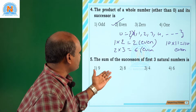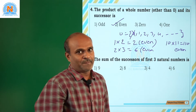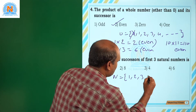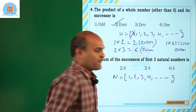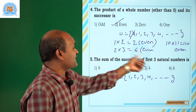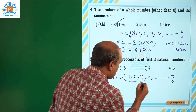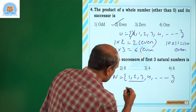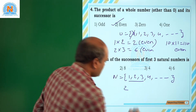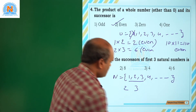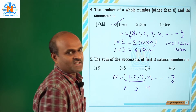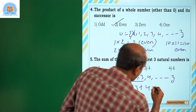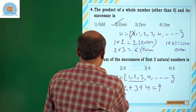Coming to the next one: the sum of the successors of the first 3 natural numbers. Natural numbers are 1, 2, 3, 4 and so on. First 3 natural numbers are 1, 2, 3. Successor of 1 is 2, successor of 2 is 3, and successor of 3 is 4. He is asking the sum of these 3 numbers: 2 plus 3 plus 4 equals 9. So the correct answer is 9.